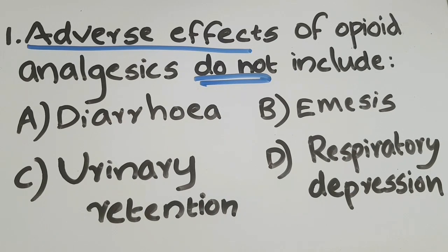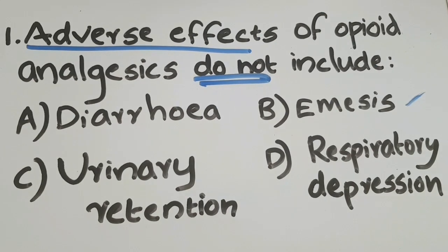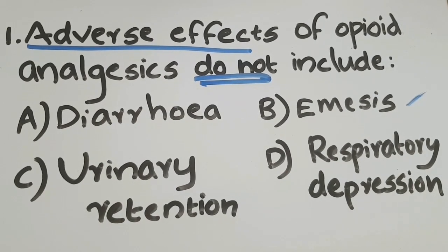The major adverse effects of opioids include nausea and vomiting. They can also cause urinary retention, sedation, hallucination, confusion, and dry mouth.